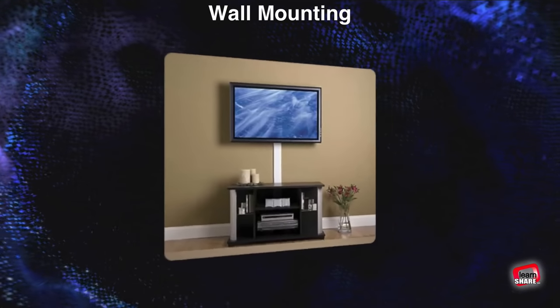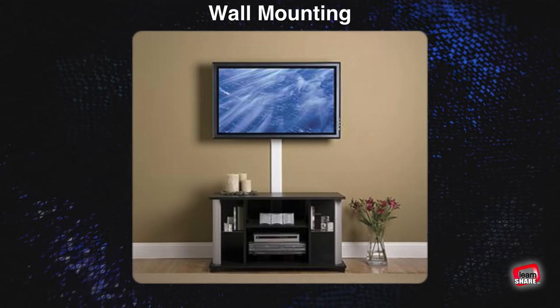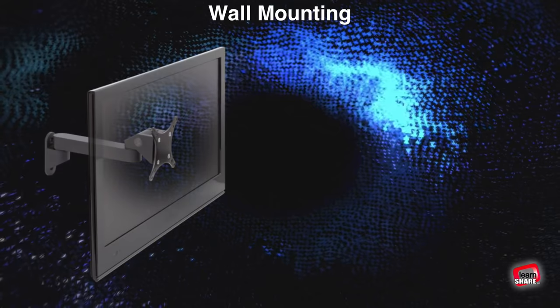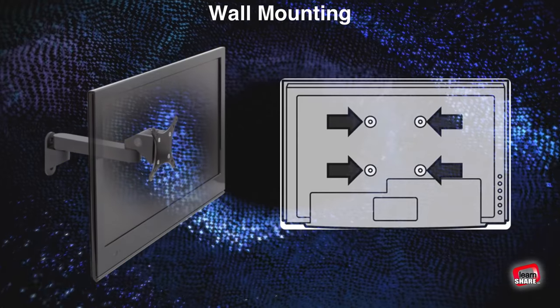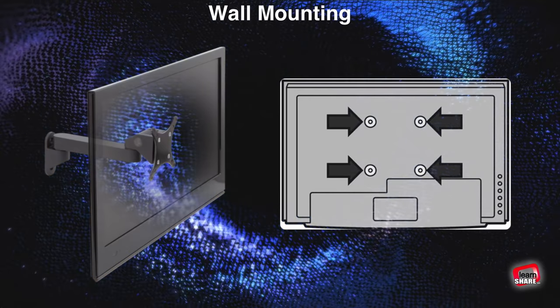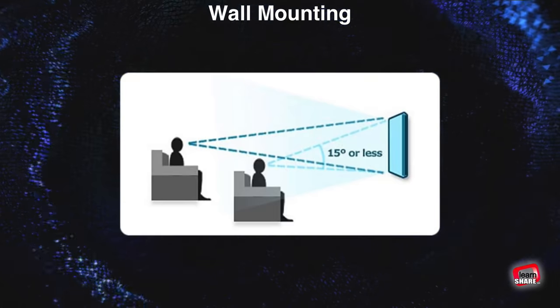First, remember that the TV will be right up flat to the wall, so you might want to go up a screen size or two. Second, many TVs don't ship with wall mounts included, so look for a TV with wall mount screw positions compatible with the VESA industry standard.